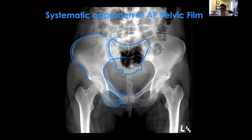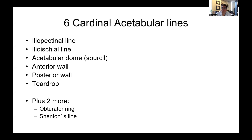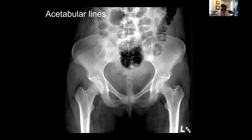También vemos fracturas acetabulares frecuentemente, y mi enfoque cambia al examinarlas. Busco las seis líneas acetabulares clave: iliopectineal, ilioisquiática, cúpula acetabular o sorcil, paredes anterior y posterior, y la lágrima. Además de esas seis líneas cardinales que describieron Judet y Letournel, también miro el anillo obturador, muy útil para clasificar las fracturas, y la línea de Shenton, que determina si hay luxación de cadera.